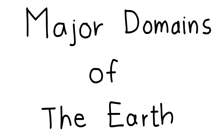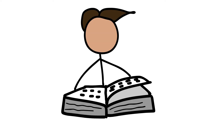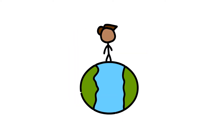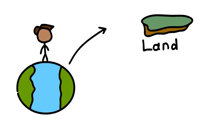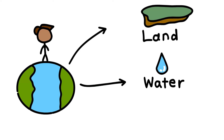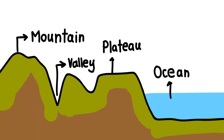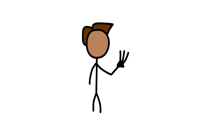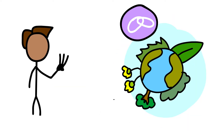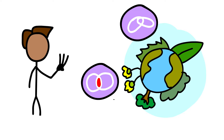Major domains of the Earth. As you have read in the first chapter, the Earth is the only planet which has life. Human beings can live here because the life-sustaining elements of land, water and air are present on the Earth. The surface of the Earth is a complex zone in which three main components of the environment meet, overlap and interact.